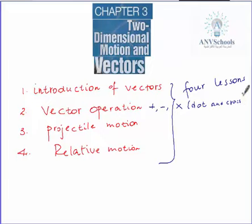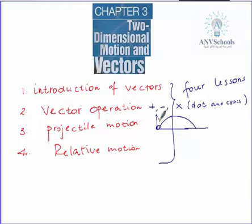Under lesson three, we will see projectile motion — what it means, the equations involved, and what the motion looks like. How do objects projected at some angle with the horizontal axis move in air? For example, if a ball is kicked into the air, how does it move? This path is called the trajectory — the path followed by a particle in projectile motion.